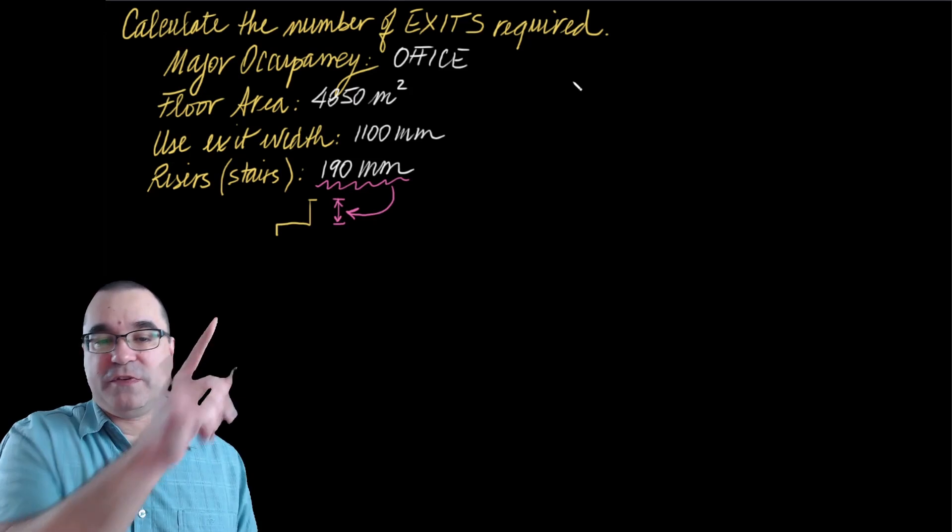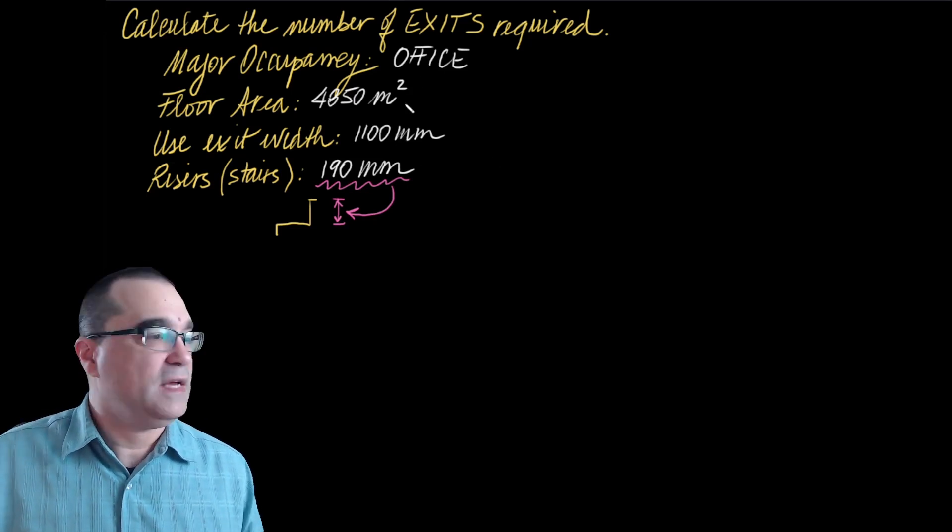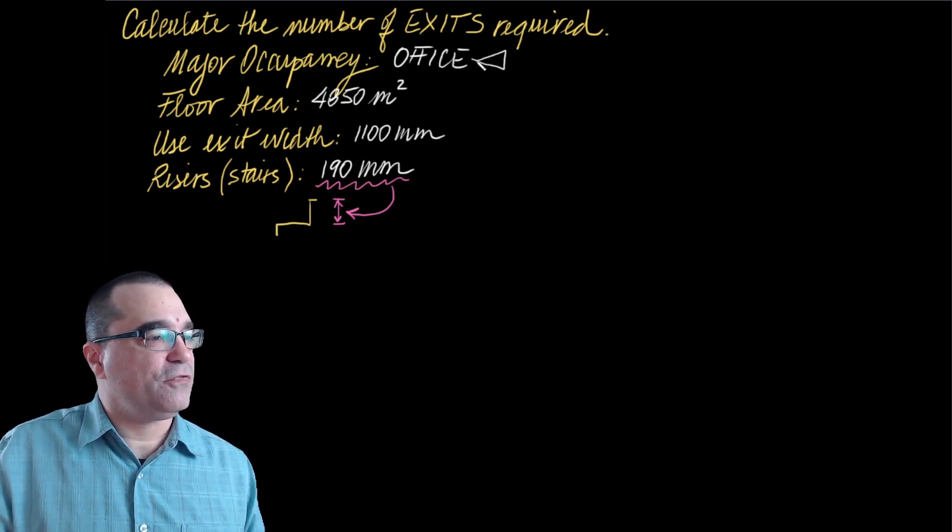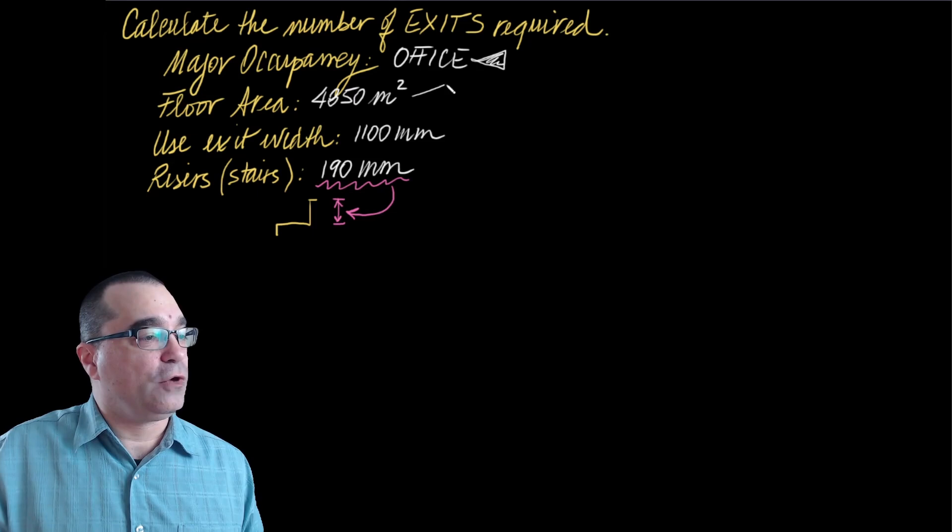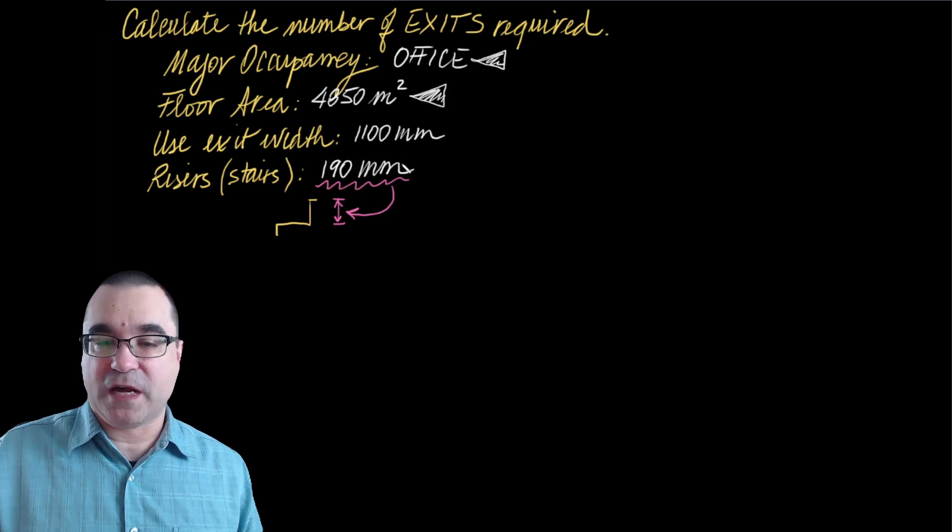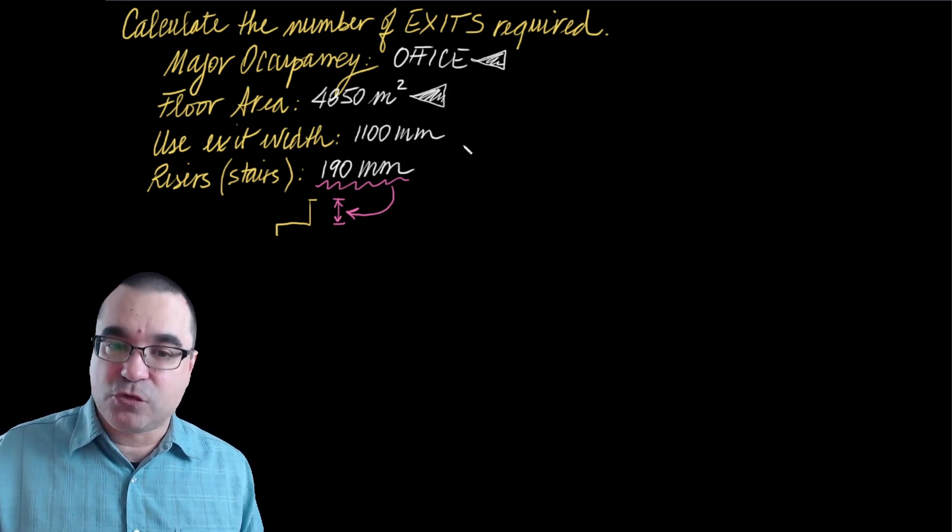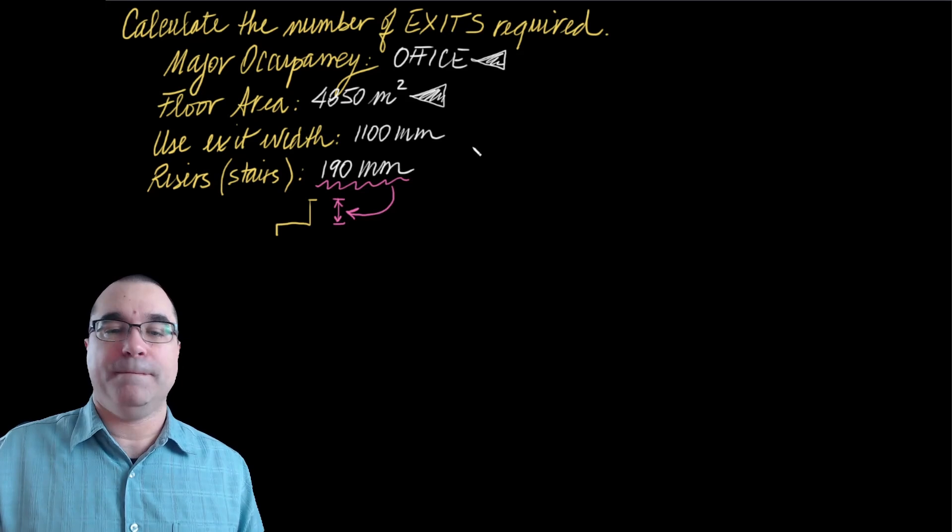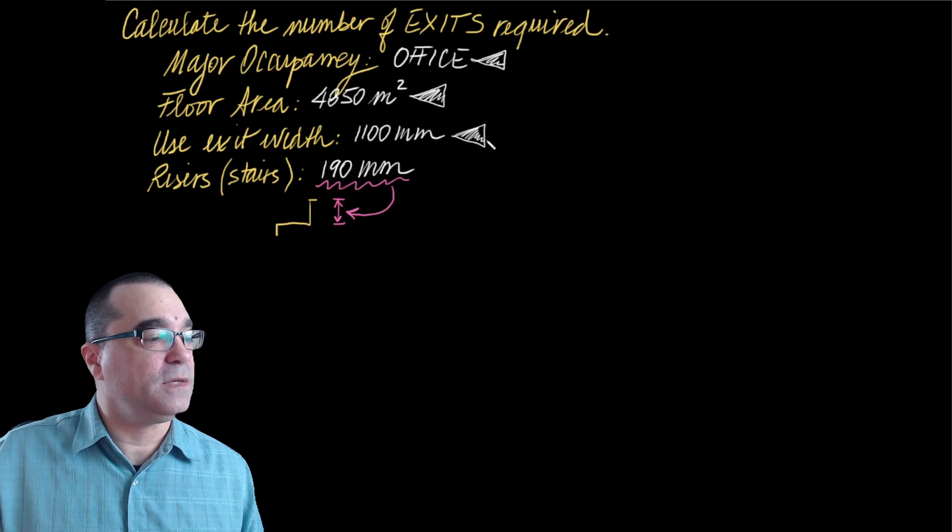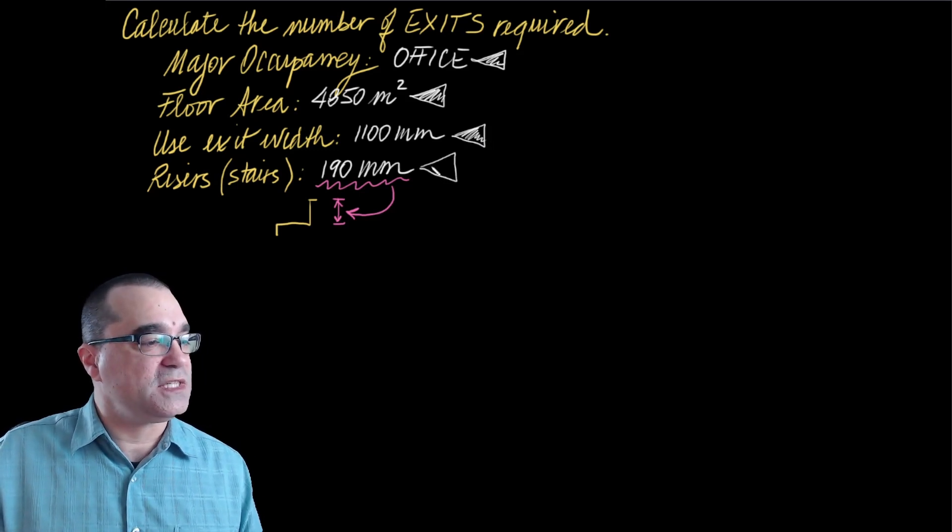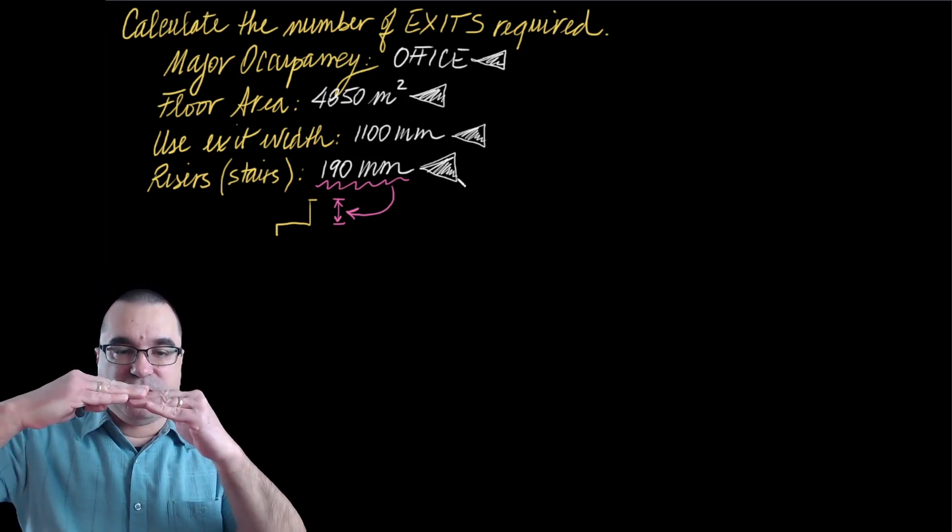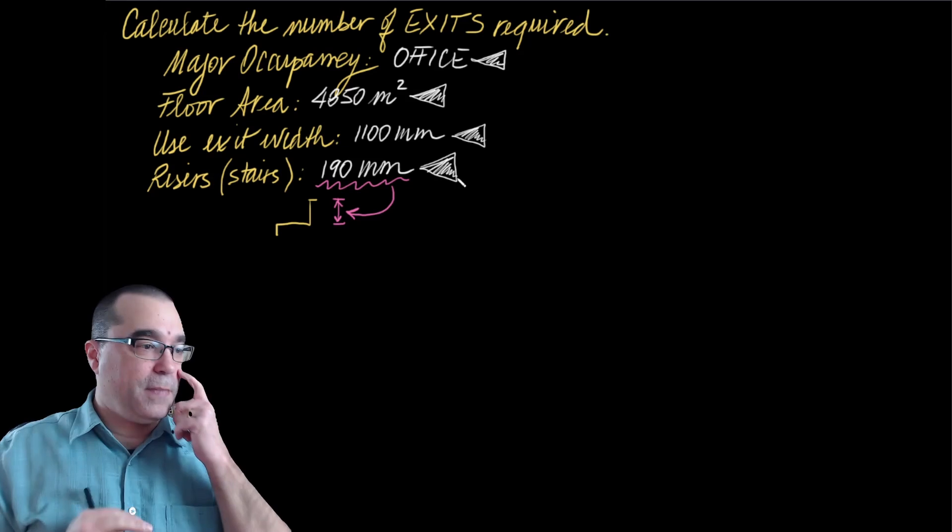We're being given a bunch of information above. Specifically, we have some kind of building that has a major occupancy of office. We have a floor area for this specific floor that we're looking at, unknown floor, 4,850 meters squared. The exit width, we're being told, must be 1,100 millimeters. That's the minimum. And we're being told that the risers for the stairs are 190 millimeters. So risers are the vertical dimensions of each step, 190 millimeters.